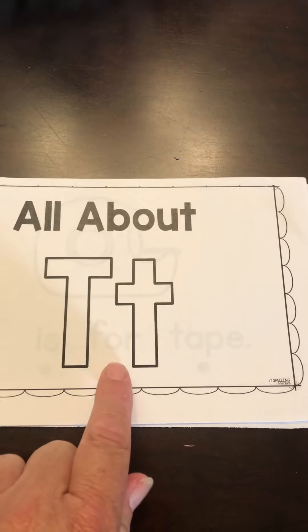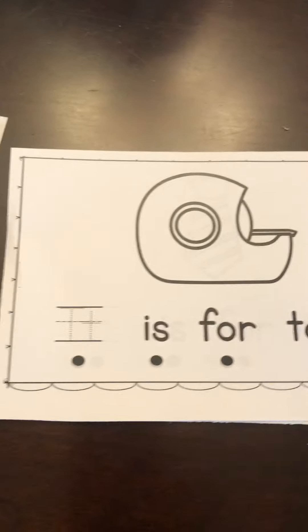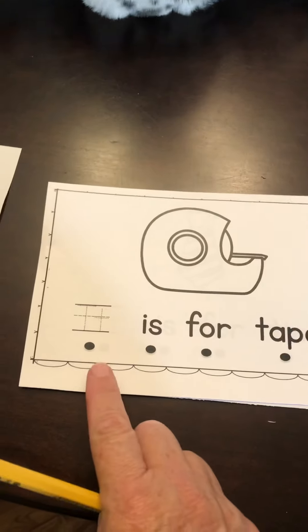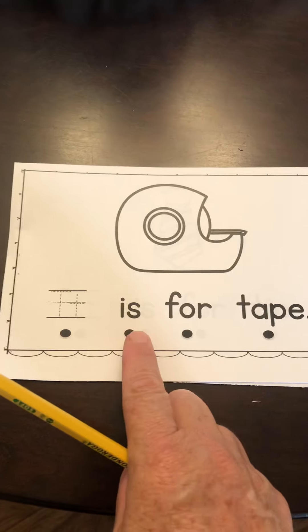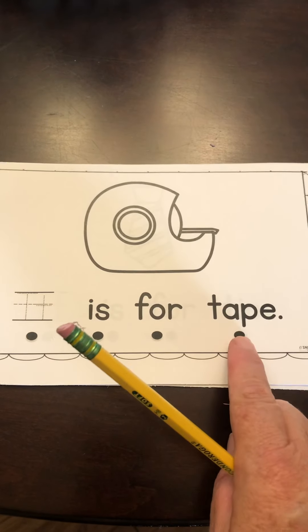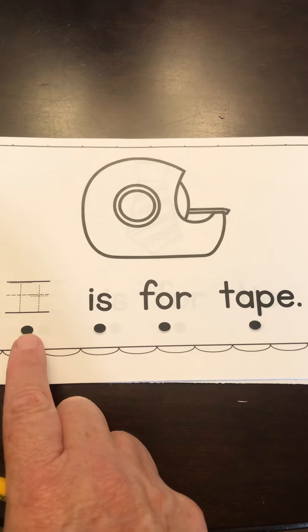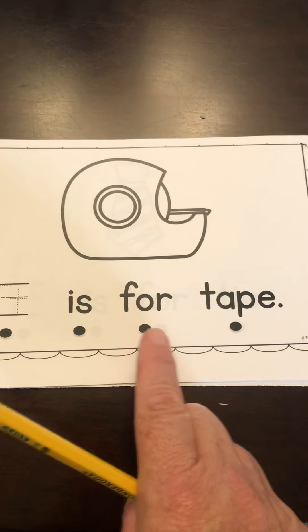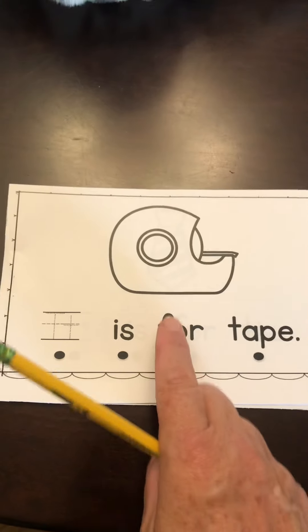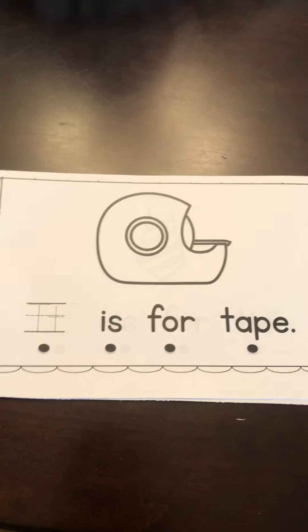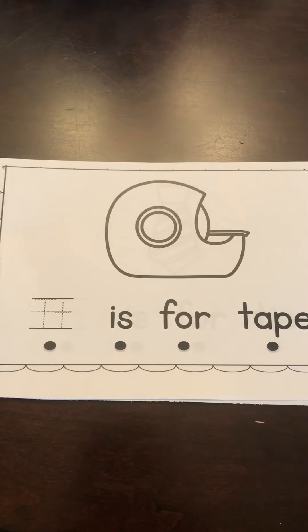Here we go. All About T. So first we're going to read the page. T is for tape. Now you try. Now tape begins with the letter T. Tape.